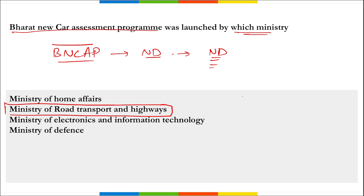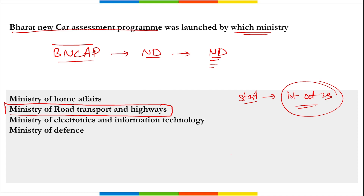The main aim of BNCAP is to enhance road safety. The program will start from 1st October 2023. It will be led by CIRT, the Central Institute of Road Transport. There is also a term M1 category, which refers to vehicles used for carriage of passengers comprising not more than 8 seats, and applies to M1 category motor vehicles with less than 3.2 tonnes gross vehicle weight.